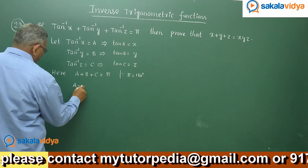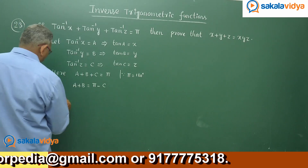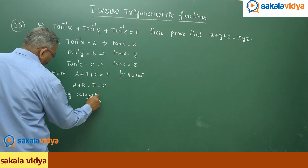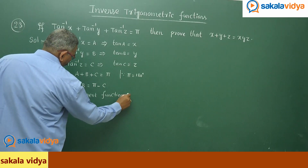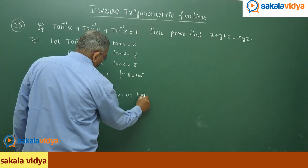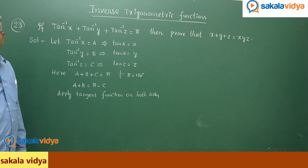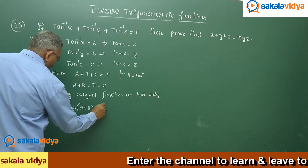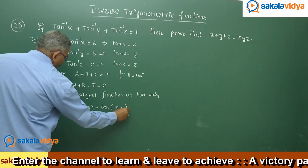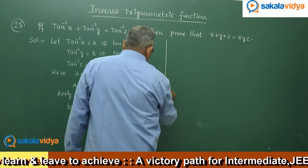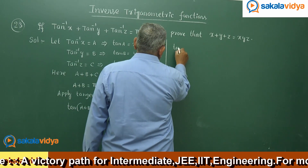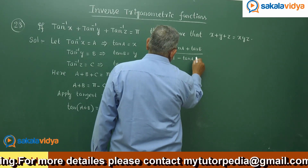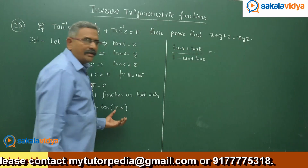Now, since a + b + c = π, we can write a + b = π − c. Applying the tangent function on both sides, tan(a + b) = tan(180° − c). Expanding the left side using the compound angle formula: (tan a + tan b) / (1 − tan a · tan b) = tan(180° − c).